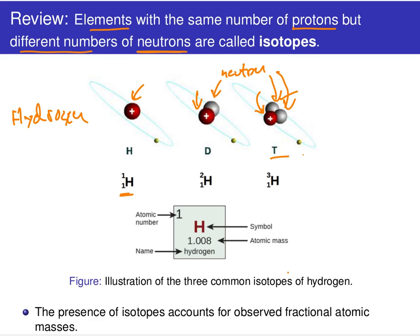Hydrogen, in its various naturally occurring forms, actually has three different isotopes. It's the presence of these three different isotopes that gives rise to the average atomic mass reported in the periodic table. Notice that on the periodic table it just says 'atomic mass,' but really what we are talking about is an average atomic mass, where we take into account the presence of all naturally occurring isotopes.